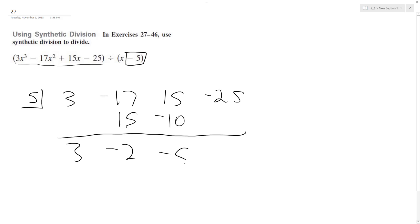Add them to get negative 5... wait, I made a mistake. This should be positive 5. Multiply these to get 25, and we get 0.